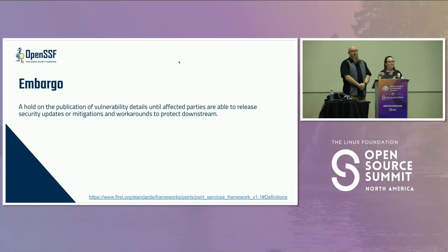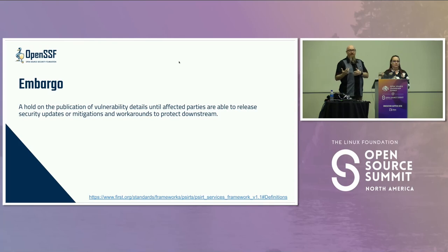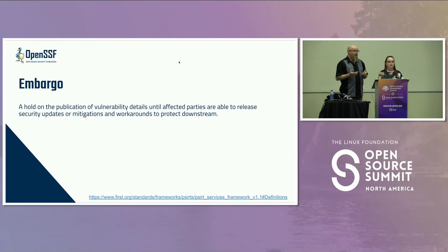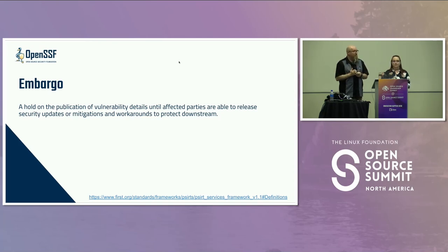A term that frequently goes along with these disclosures is 'embargo.' This is a period of time when the issue is kept private — typically when a reporter or a project finds an issue and they work quickly to get it addressed. Based on the complexity of the issue, a software maintainer may include other people in their project or other projects needed to help create fixes or coordinate. But this is generally a time when the information is secret and not publicly done.